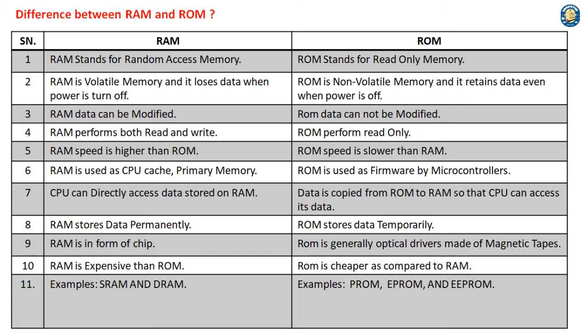9. RAM is in the form of a chip. ROM is generally optical drives made of magnetic tapes. 10. RAM is more expensive than ROM. ROM is cheaper as compared to RAM.